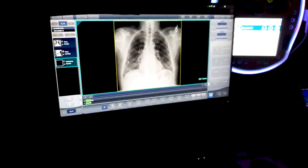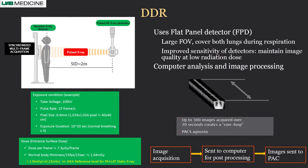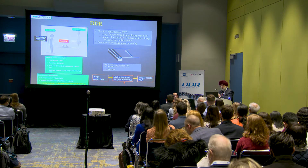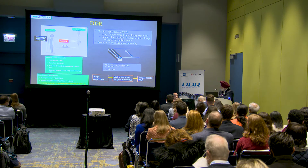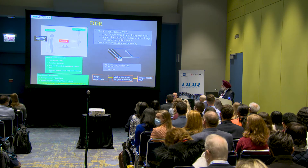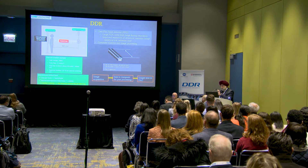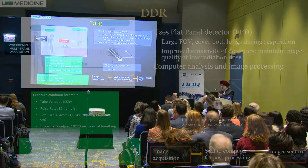There is an extra step in DDR: rather than images going directly to PACS once acquired, they have to go through a computer for post-processing. This requires some extra time, which can be a little troublesome if you have a very busy practice — so we assign those cases accordingly. DDR generates almost 300 images over a period of 20 seconds, which is why it takes a little time to compile them into a cine loop to play for viewing.